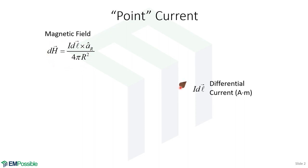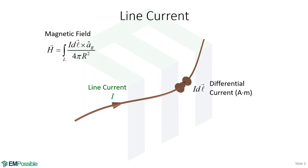We have this tiny little differential current element that induces a differential magnetic field around it. So if there was a point current, I think this would be it. If we look at a line current, we will integrate this differential current element over the length of that line to get the total magnetic field intensity.